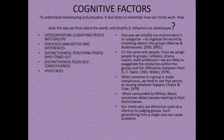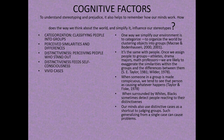The second cognitive factor is perceived similarities and differences. Once we assign people to groups — athletes, drama majors, math professors — we are likely to exaggerate the similarity within groups and the differences between them. The third factor is distinctiveness — perceiving people who stand out. When someone in a group is made conspicuous, we tend to see that person as causing whatever happens. Additionally, when surrounded by whites, Black people sometimes detect others reacting to their distinctiveness.